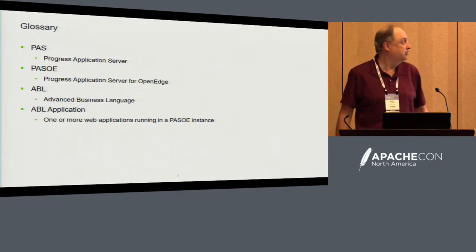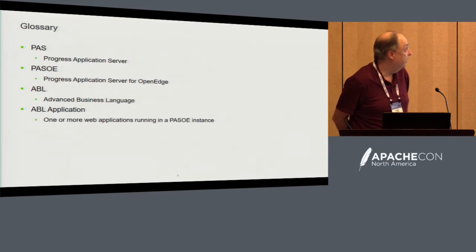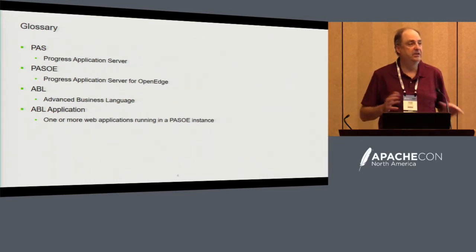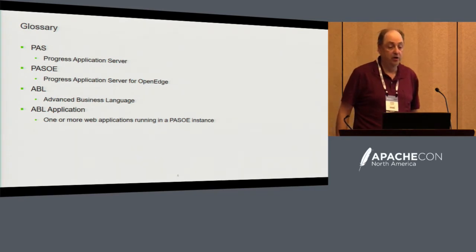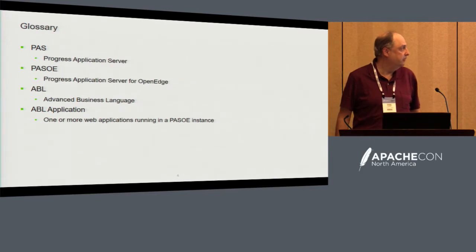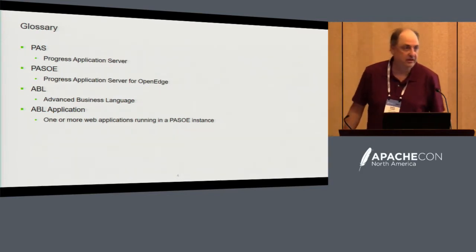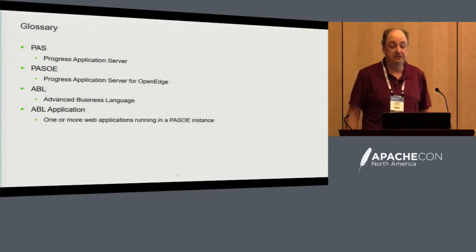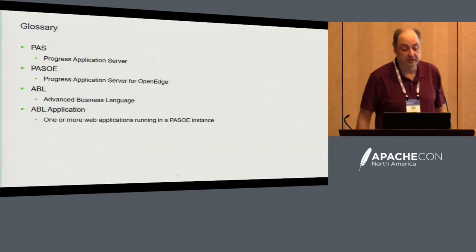It's been a while since I actually talked to a group that wasn't part of our user community, so I'm probably going to be using some terms that you aren't familiar with. When I say PaaS, I'm talking about the Progress Application Server — an application server based on Tomcat that contains a core set of capabilities we use for different products within our company. PaaS-OE is the specific flavor of the app server we use for OpenEdge, which is the division I work for. ABL stands for Advanced Business Language — really the 21st century marketing term for 4GL, which is where our company comes from. Inside Tomcat we support multiple ABL applications, and an ABL application can take one or more web applications running inside an instance. This does generate some challenges, especially in things like logging.